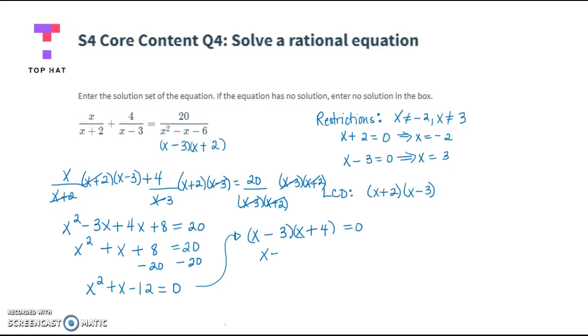So now we set x minus 3 equal to 0 or x plus 4 equal to 0. Our possible solutions are 3 or negative 4.